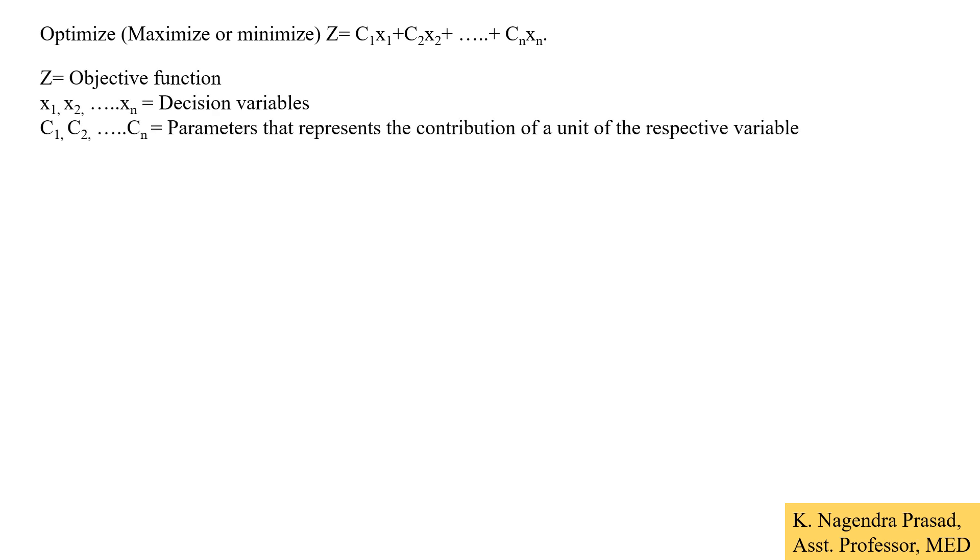Here, Z is the objective function. x₁, x₂, ...xₙ are the decision variables. C₁, C₂, ...Cₙ are the parameters that represent the contribution of a unit of the respective variables. In general, we are calling as the weight factor of the respective variable.